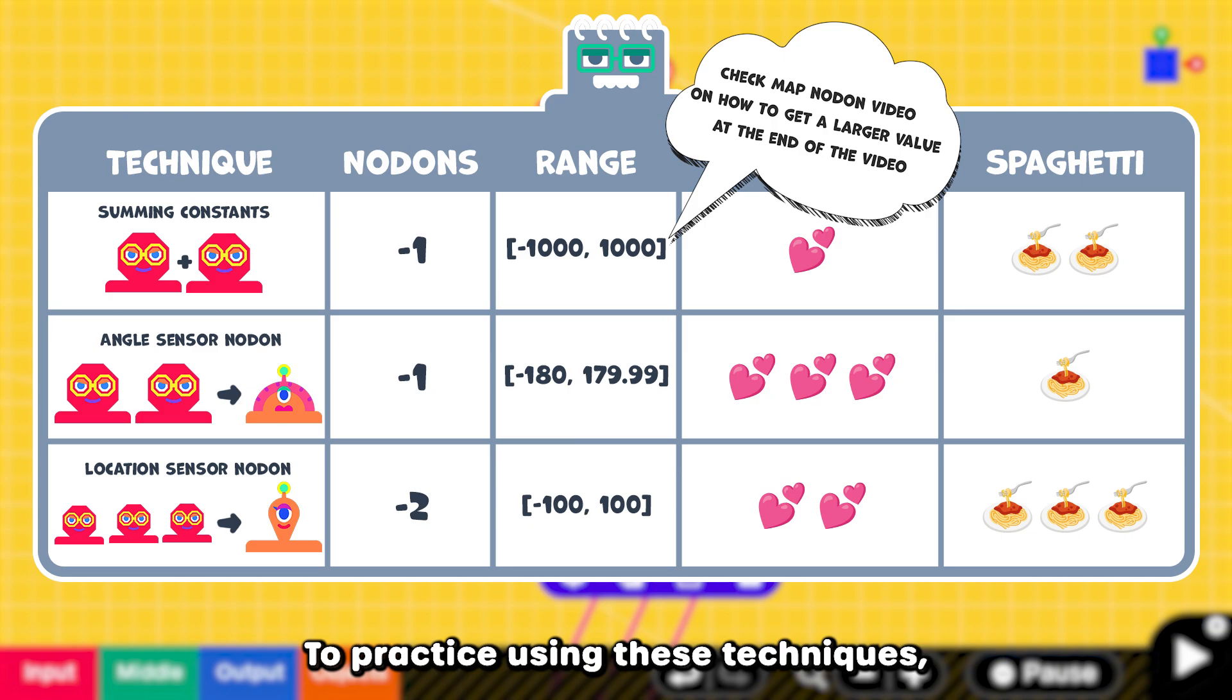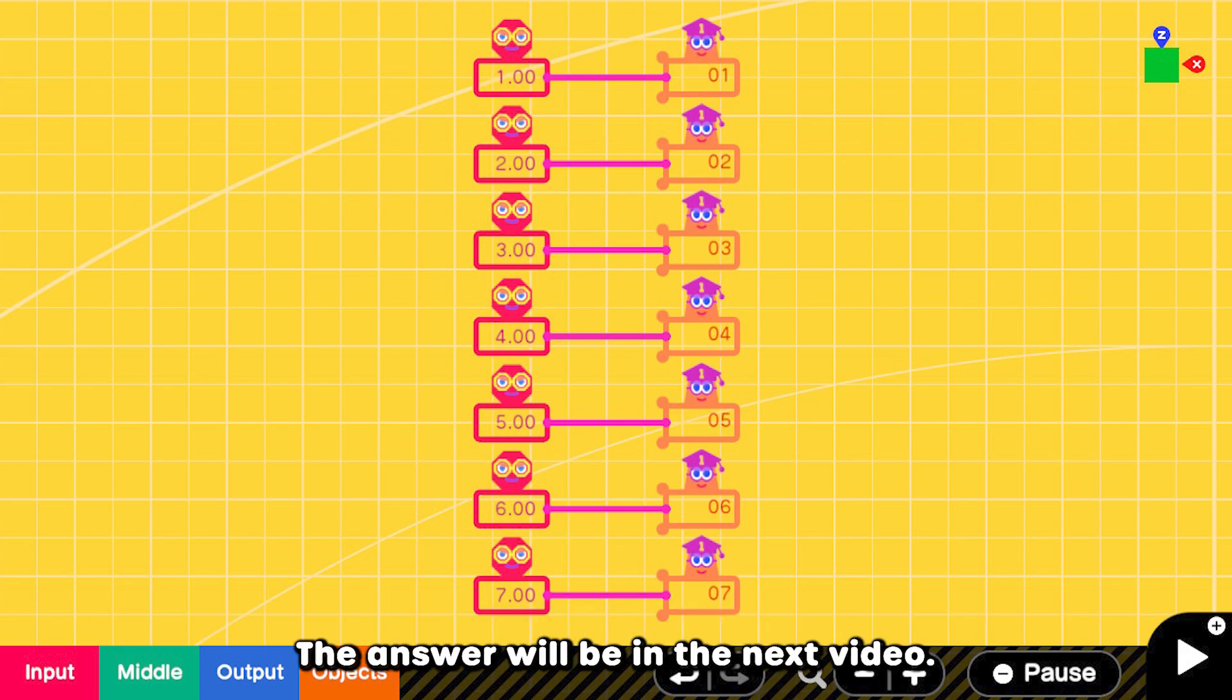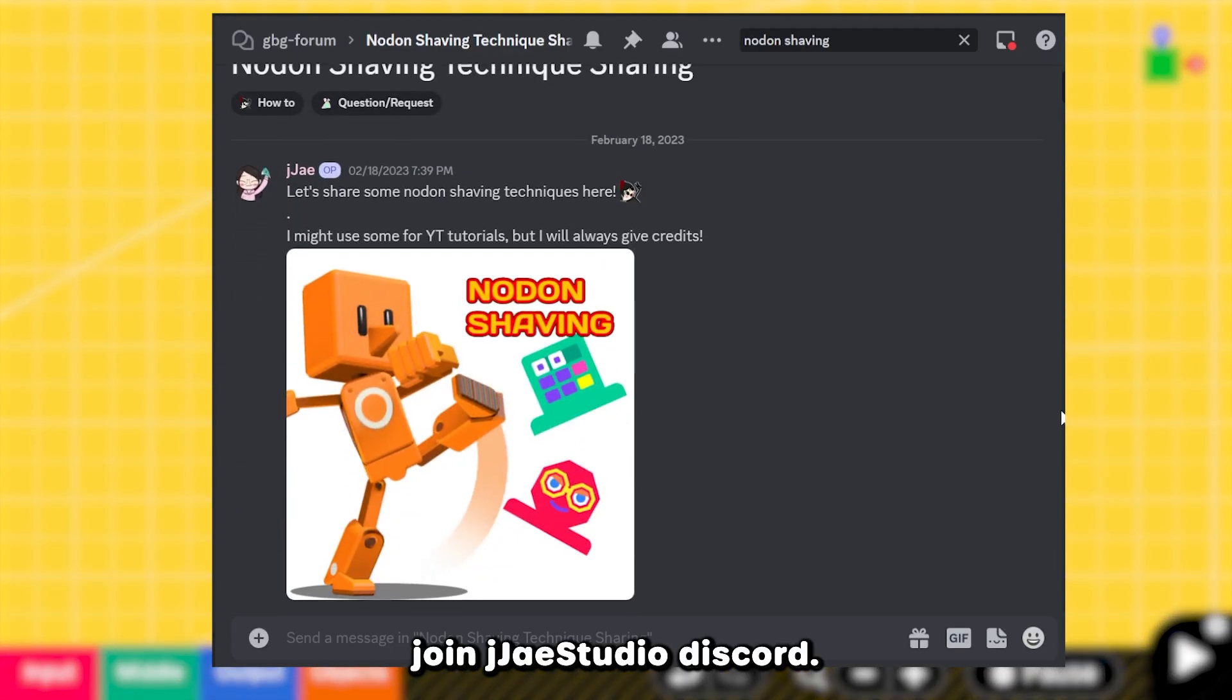To practice using these techniques, let's have a quiz. Can you replace these seven constant nodons with just one nodon? The answer will be in the next video. If you want to know the answer first, join JJ Studio Discord.